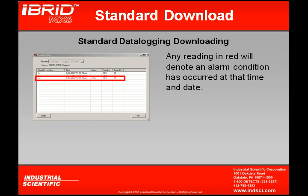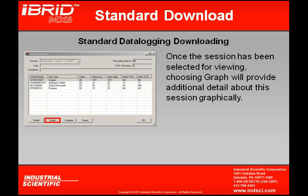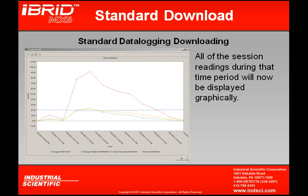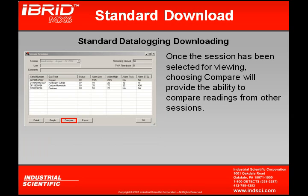Now I can view the details of my sensor readings. If I have any indications in red, that's an indication that that sensor was in alarm. If I want to view those readings graphically, I can pick one individual sensor by highlighting it. Once highlighted and I click Graph, I can now view the readings graphically — a graphical representation of all the readings that took place during that time period. If I wish to compare my readings with a previous session, by clicking the Compare button, I can compare those readings from one session to another.